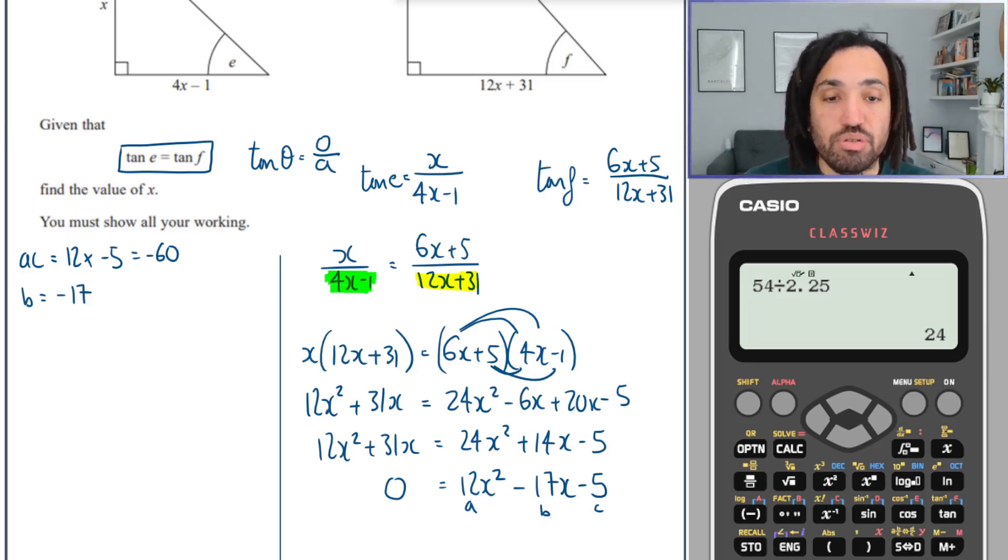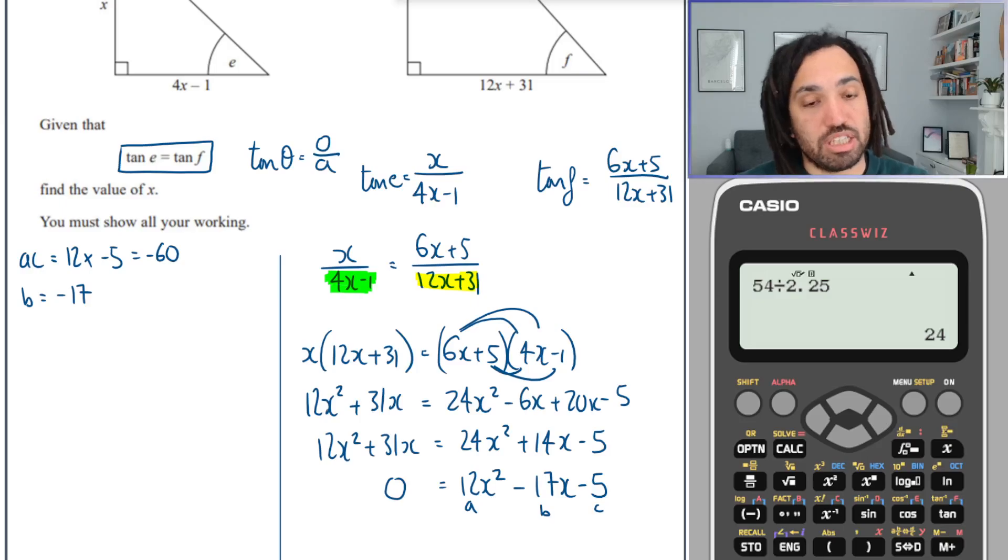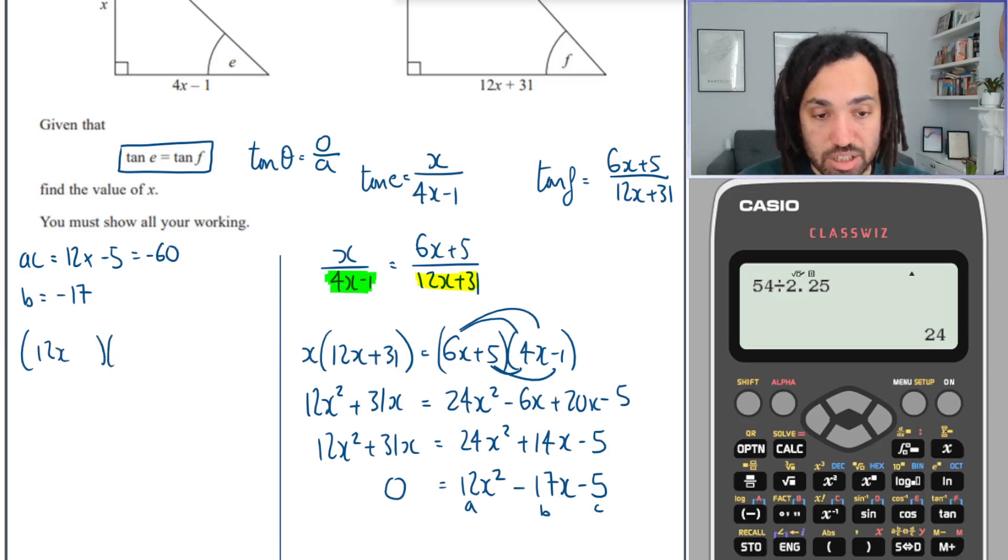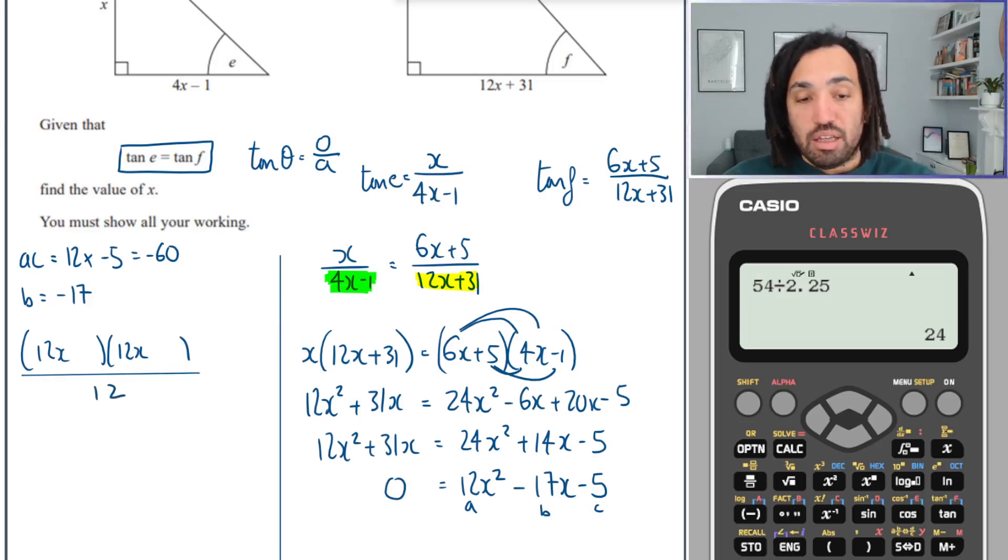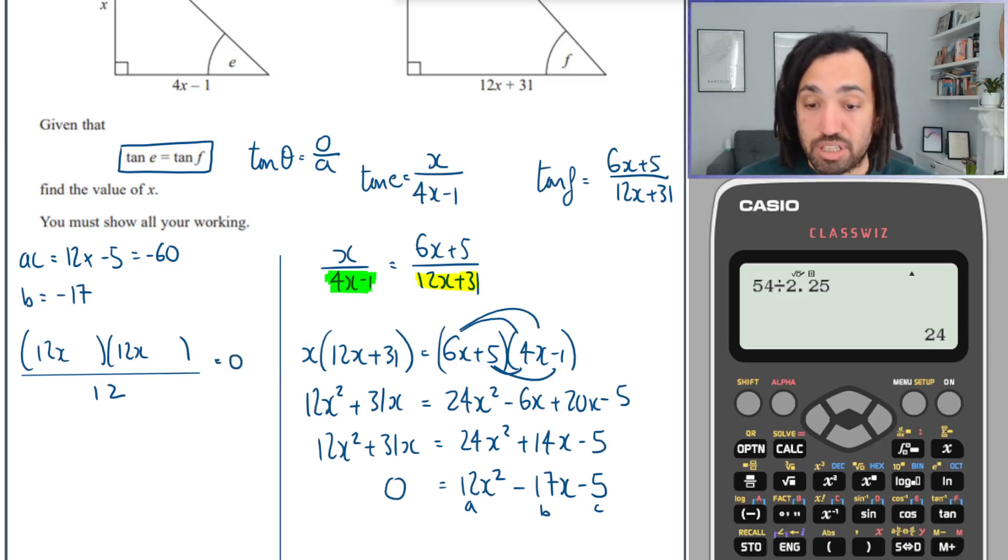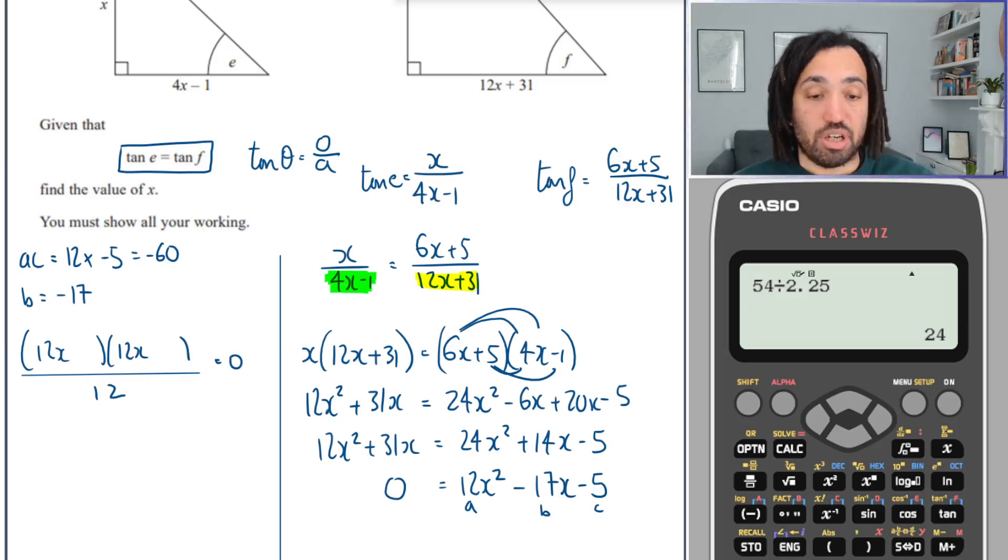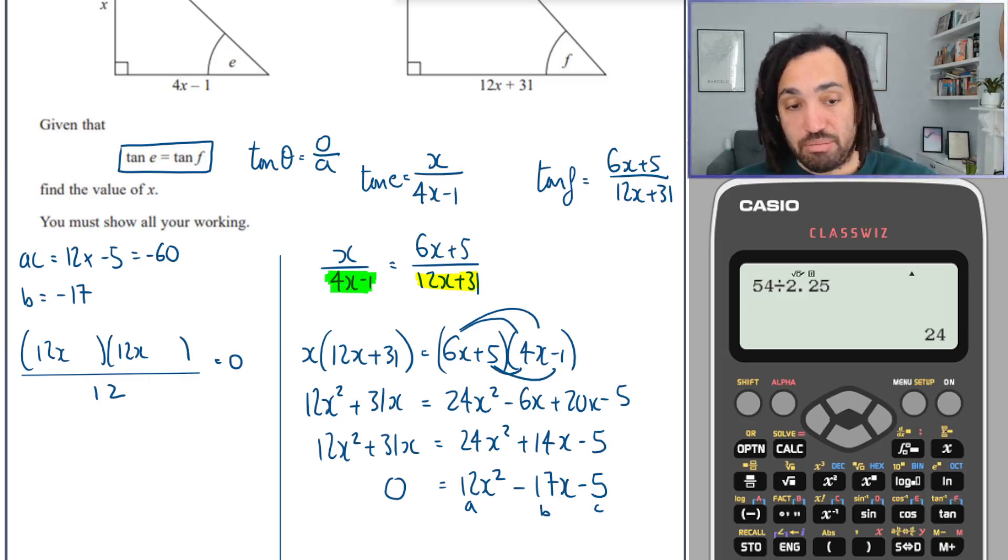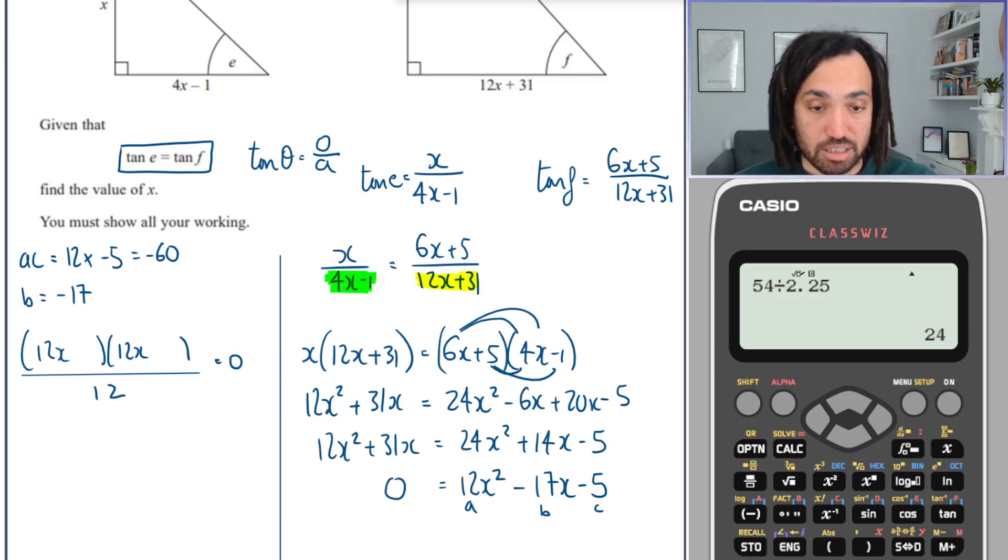And the B term is the number of x's. So I'm looking for two numbers that times together to make minus 60 and add to make minus 17. And while I'm thinking about it, I write 12x in one bracket, 12x in the other bracket, all divided by 12. We do that because the A term is 12.